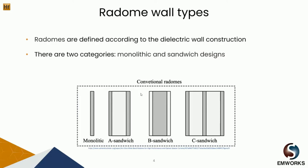Let's look at some radome wall types. Radome wall designing is a challenging task in the manufacturing of antennas, and the choice of wall construction will depend upon the requirements of the application. The wall must withstand environmental effects such as erosion, rain, lightning strikes, and aerodynamic loads. Radomes can be classified as monolithic and sandwich designs. The two types of monolithic designs are half-wave radomes and electrically thin wall radomes. Sandwich designs can be characterized into A sandwich, B sandwich, C sandwich, and multi-layered dielectric wall. At the bottom we have an image showing different designs of conventional radomes.